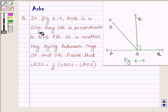POQ is a line, ray OR is perpendicular to line PQ, OS is another ray lying between rays OP and OR. Prove that angle ROS is equal to half of angle QOS minus angle POS.